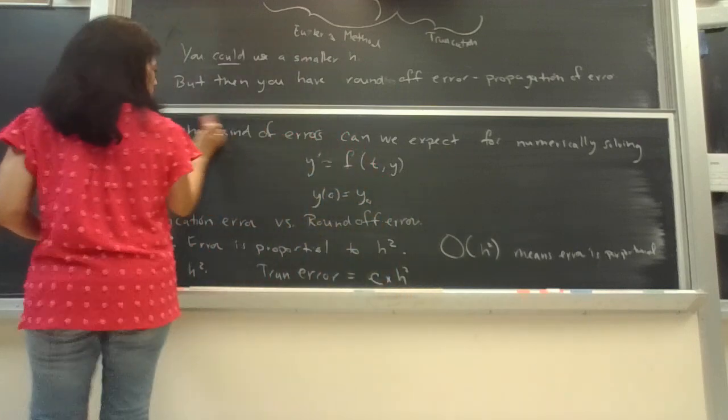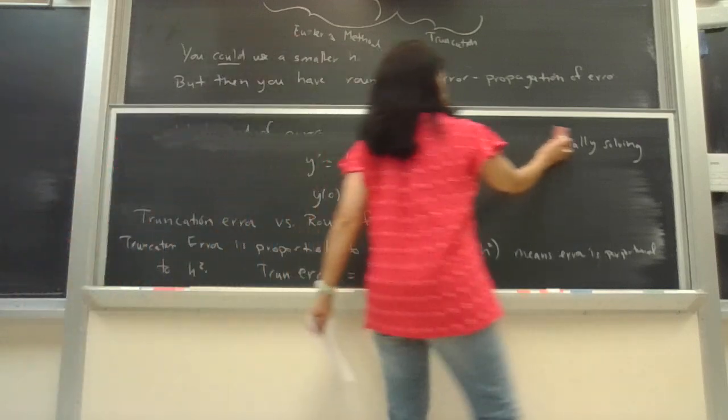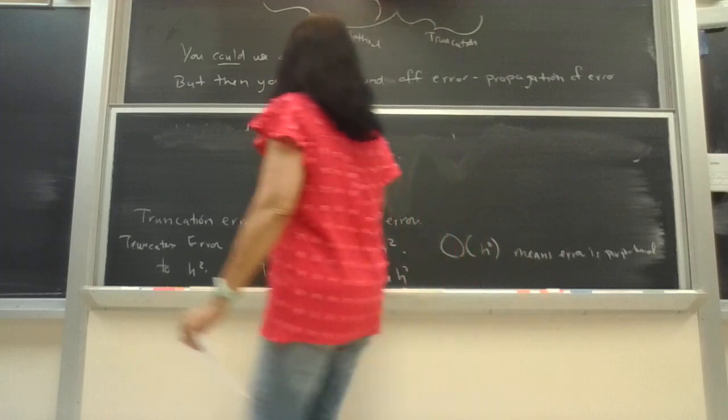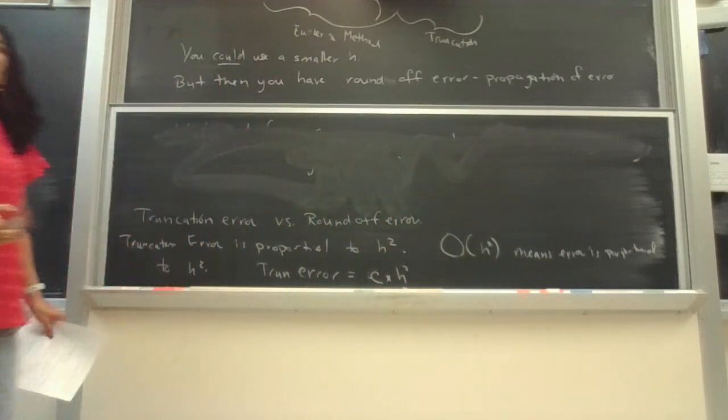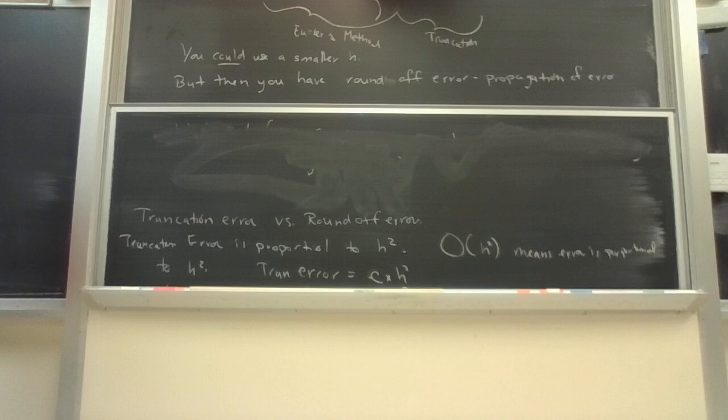Because technically then you can just do Euler's method and you don't need to teach any other methods and everybody can choose their H really small. It just doesn't work.